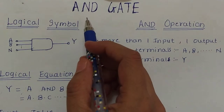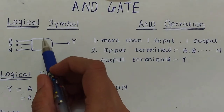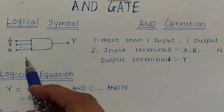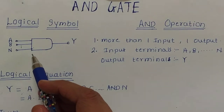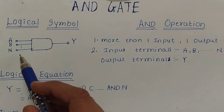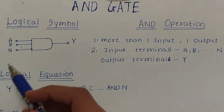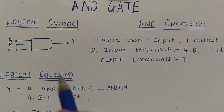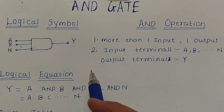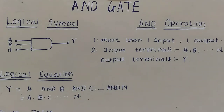Today we will discuss the AND gate. This is its logical symbol. In the logical symbol, we can see that more than one input is present. The inputs are A, B, and up to N, and the output is Y. So we can say that the AND gate has more than one input and one output.